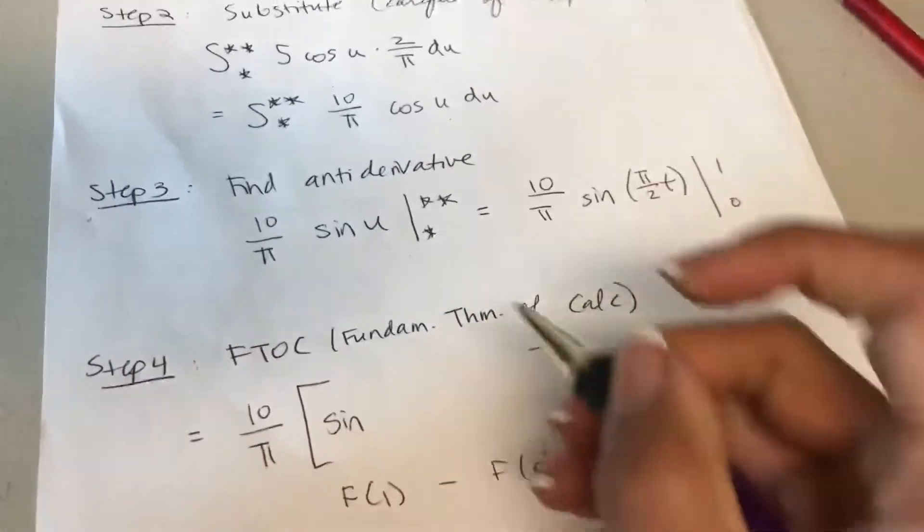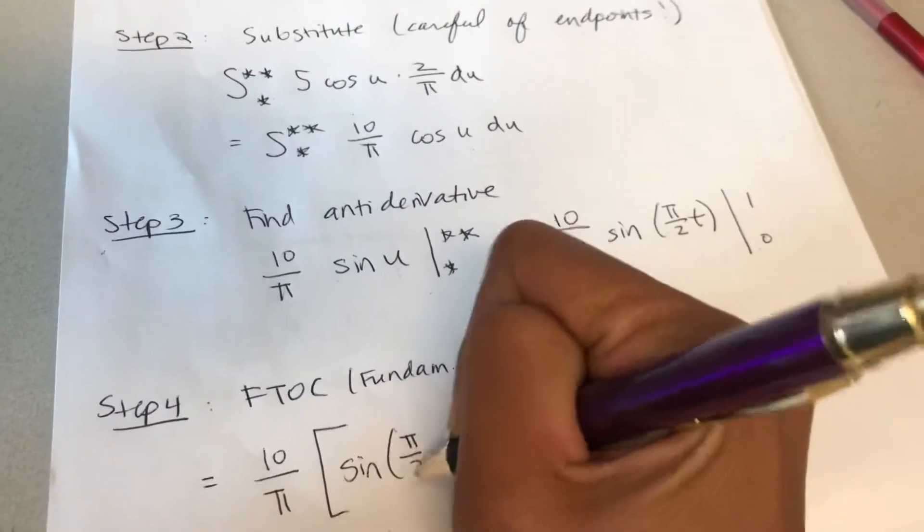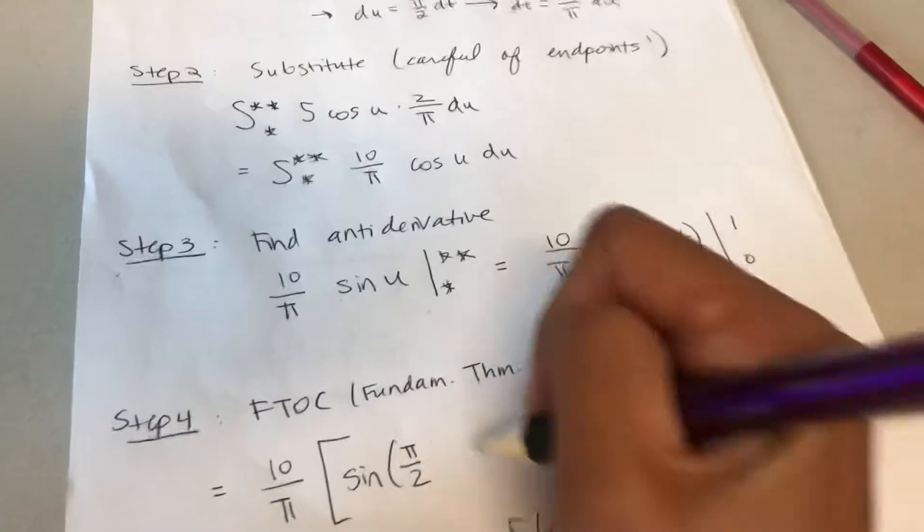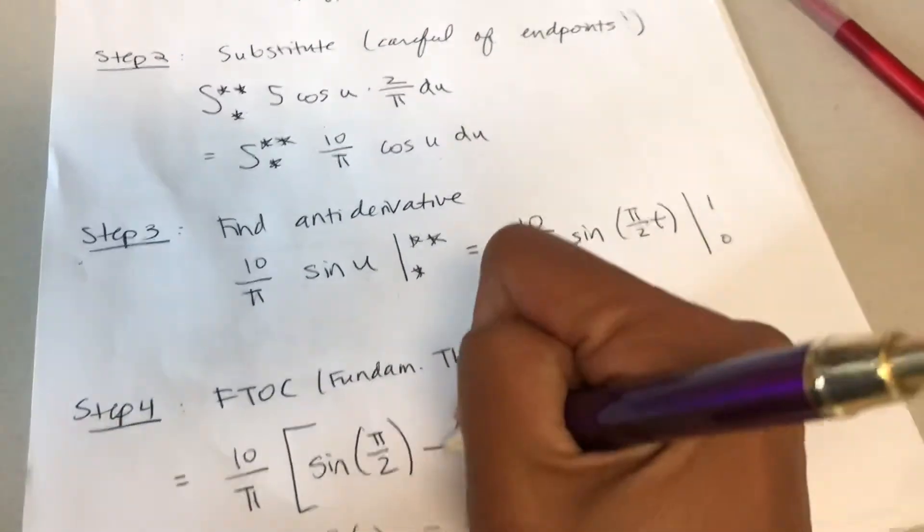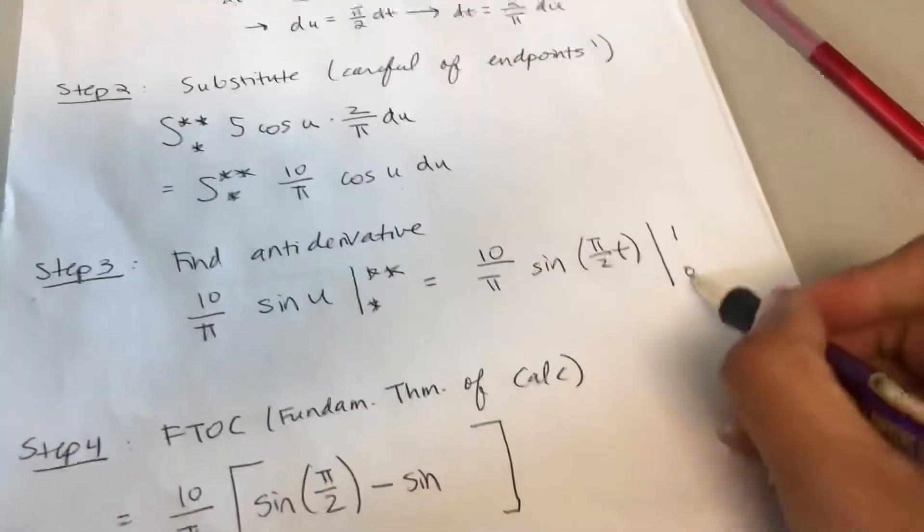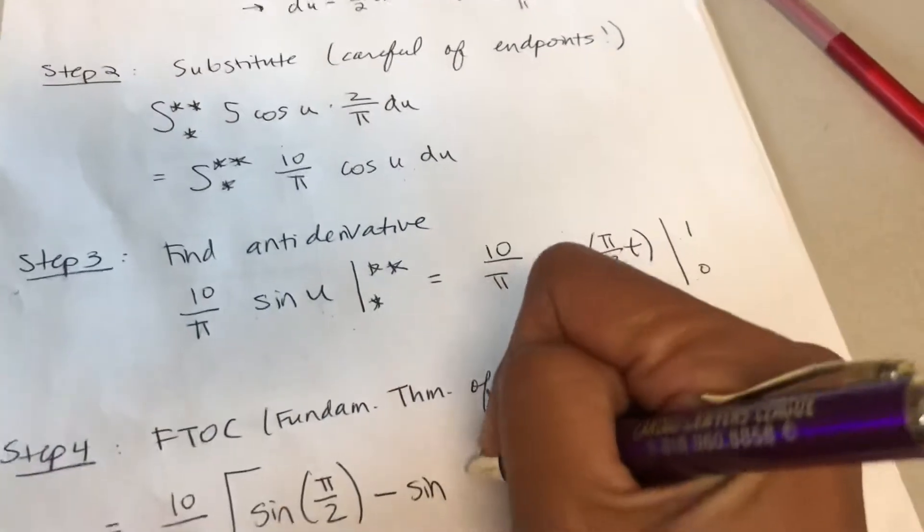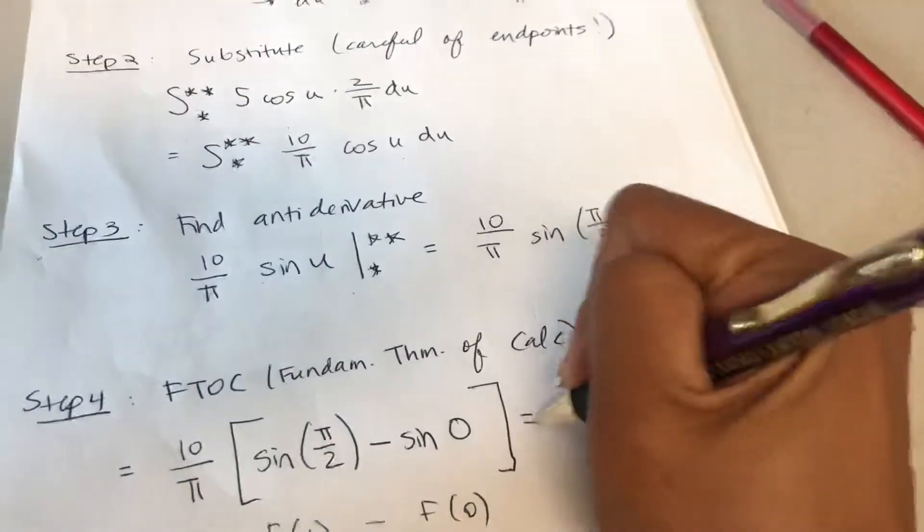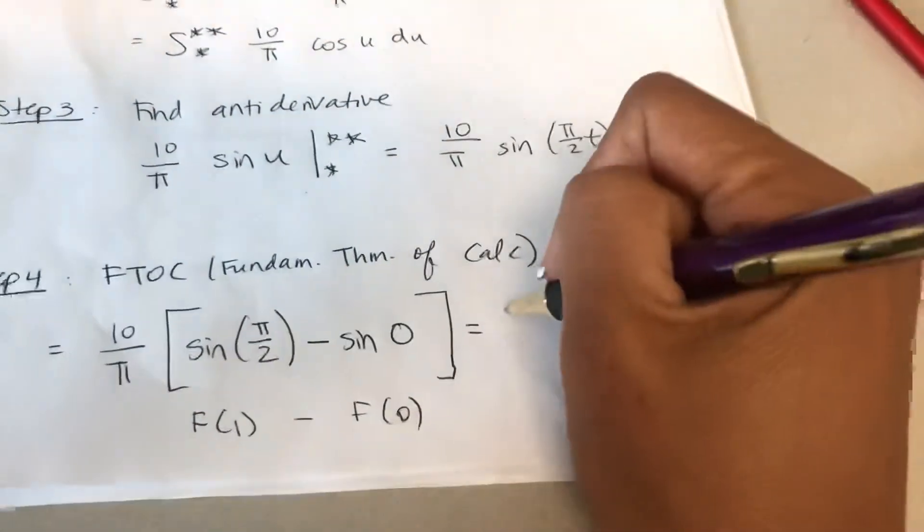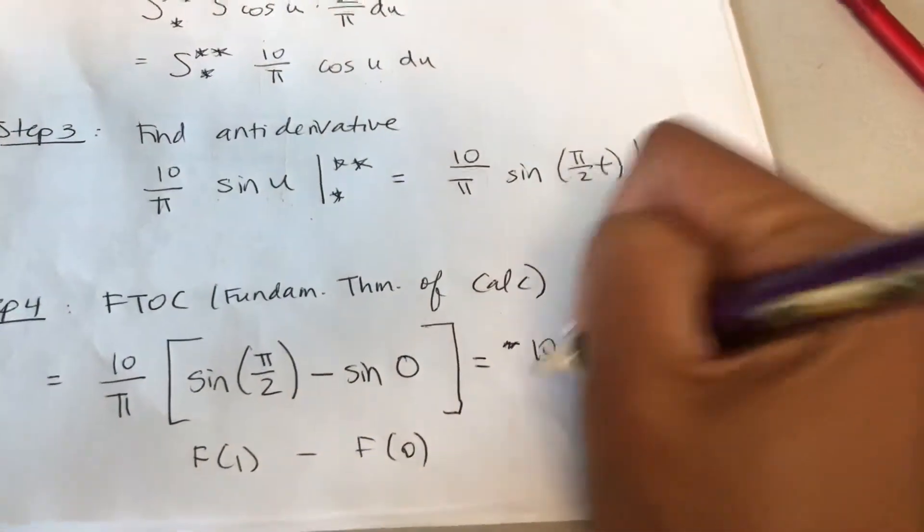Here I get sine of pi over 2. When I plug 1 in here, it just becomes pi over 2 minus sine. When I plug 0 in here, I get sine of 0. What does this give me? This gives me 10 over pi.